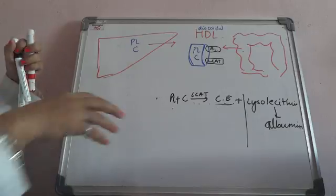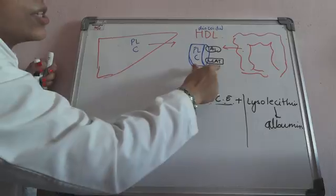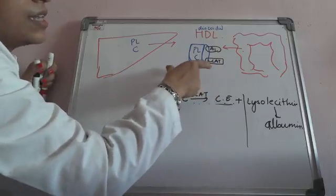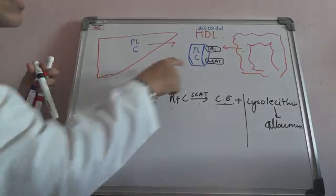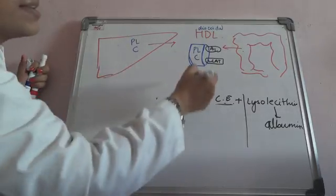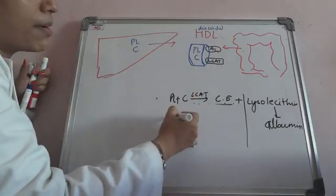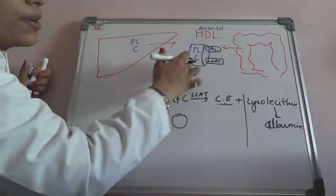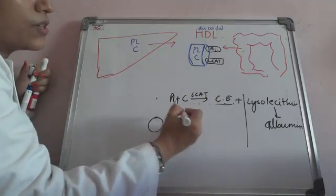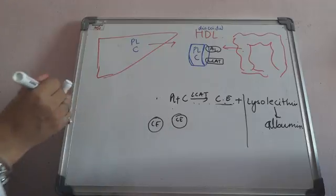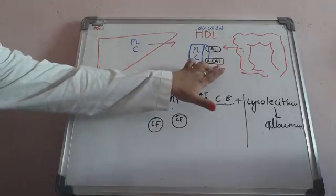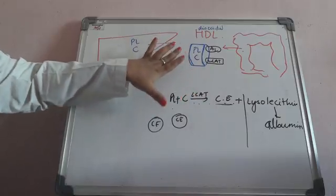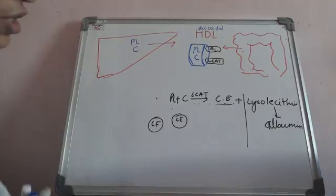So I just want to make a point clear: here in discoidal HDL you have LCAT, and cholesterol is present, therefore the shape is dense — that is discoidal. As and when the cholesterol ester gets accumulated in it, it will become round and round, so this structure will change to spherical when the cholesterol gets converted to cholesterol ester. You have to keep in mind that LCAT is present in discoidal HDL and it will convert the cholesterol to cholesterol ester.